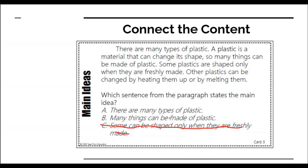Now does it talk about things that can be made of plastic? A plastic is a material that can change its shape. So many things can be made of plastic. Some plastics are shaped only when they are freshly made. Other plastics can be changed by heating them or by melting them. It does not mostly talk about many things that can be made of plastic. So our main idea is A — there are many types of plastic.